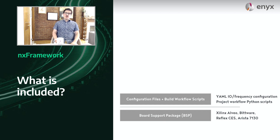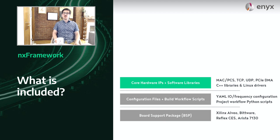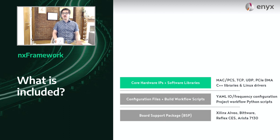We released ENIX Framework to early adopters, but it was only including our core hardware IPs — our Ultra Low Latency MAC PCS, our TCP stack, UDP stack, and PCIe DMA engine. All of those IPs were delivered along with C++ APIs to make sure that those IPs can be easily configured and monitored in production, as well as our Linux drivers to make sure that customers can easily deploy this onto servers or switches.